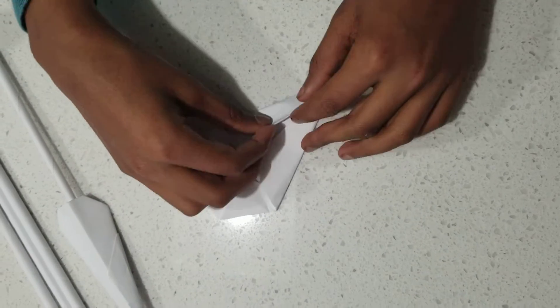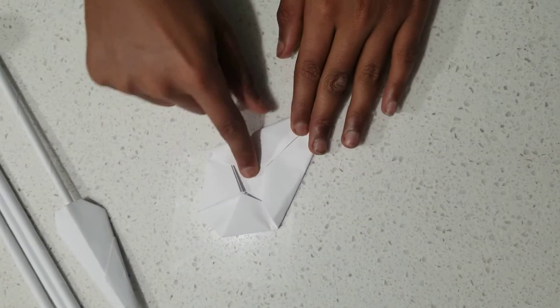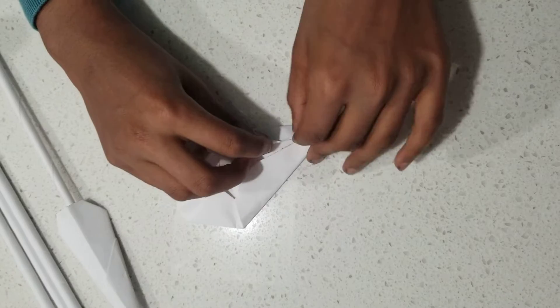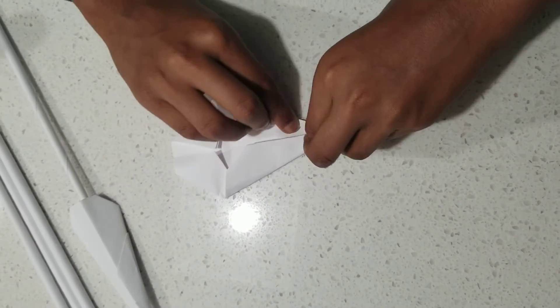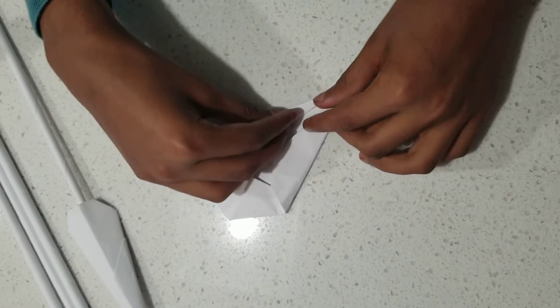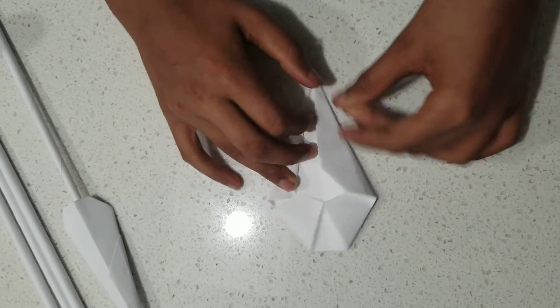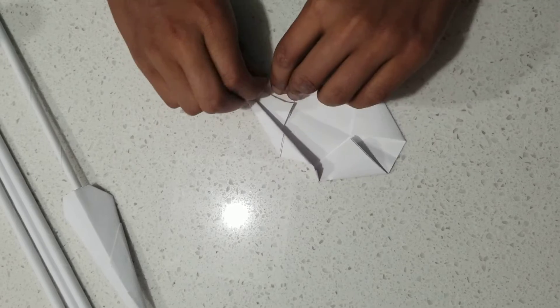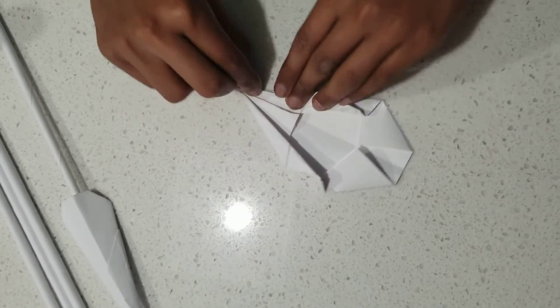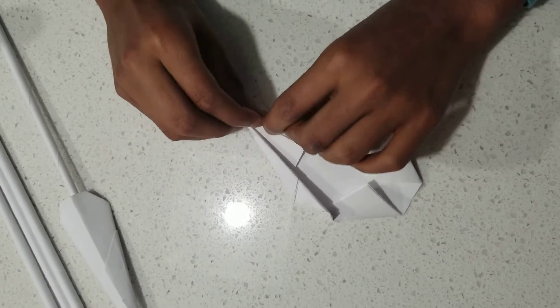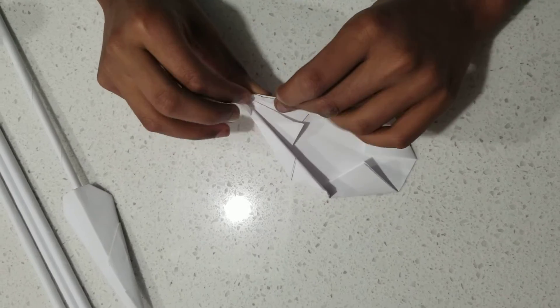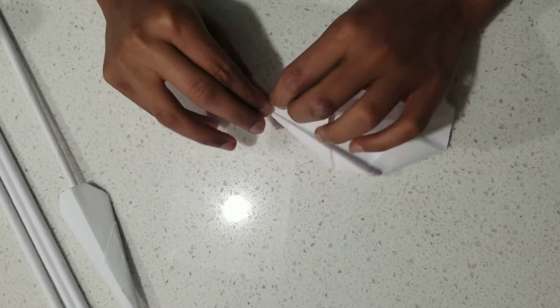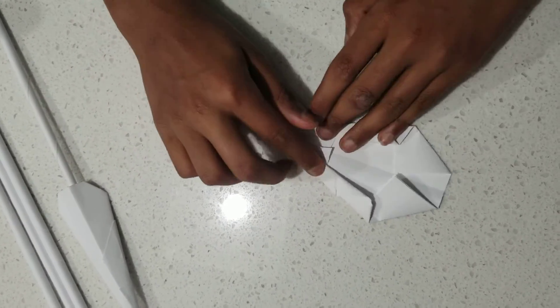Then, fold this edge here to the other part of this thing. And fold this part to the other part. If you couldn't figure it out already, we're making the blade of the arrow, if you could call it that. I'm not a weapons expert, so I just call it the blade.